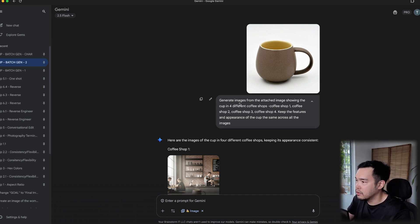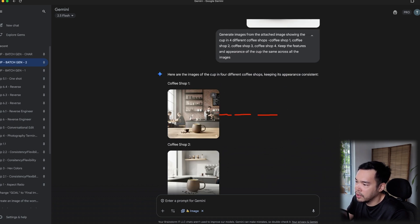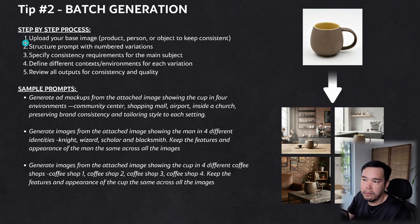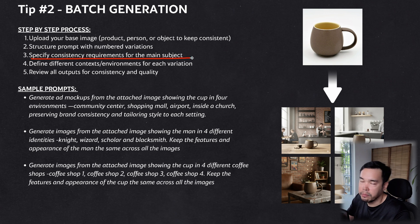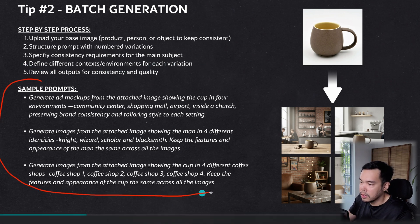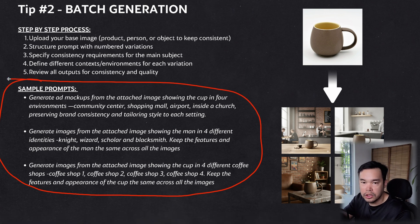If you want variations but aren't sure which ones you want, you can simply say coffee shop one, coffee shop two, coffee shop three, coffee shop four — and Nano Banana generates four different coffee shop images. For the step-by-step: upload your base image, structure the prompt with numbered variations, specify consistency requirements for the main subject like 'keep the features of the cup the same,' and define the different environments for each variation.